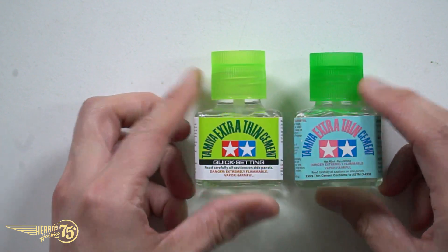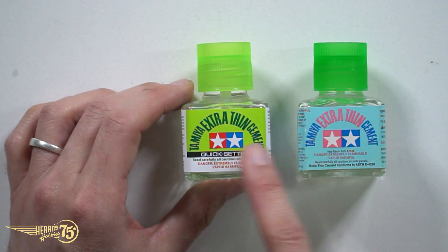Now with these particular glues, the little trick I have is a really simple and somewhat obvious one but a lot of you may not know about it. It's a bit like the Tamiya tape trick. If you look at the overhead, I've got the two Extra Thin Cements.